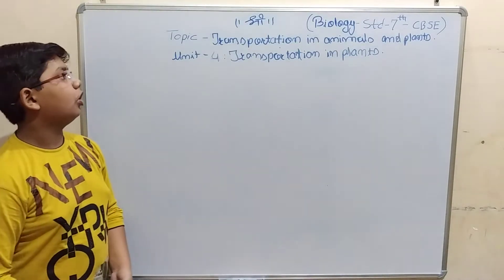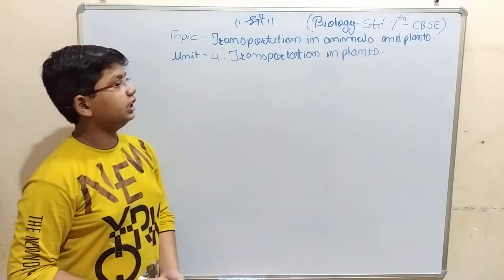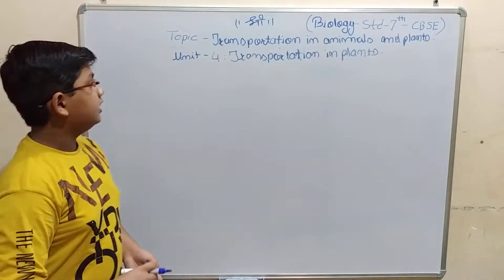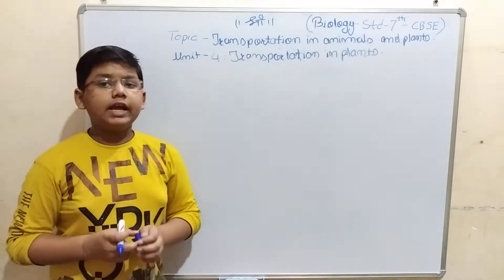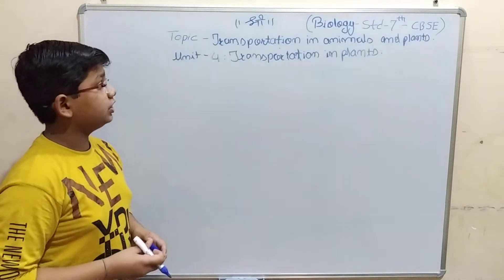Now we will learn about Unit 4 of Topic Number 6: Transportation in Animals and Plants of Biology, Standard 7 CBSE. Till now we had learnt about transportation in animals. Now we will learn about transportation in plants.